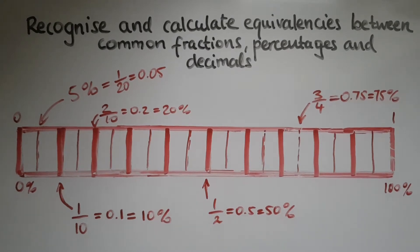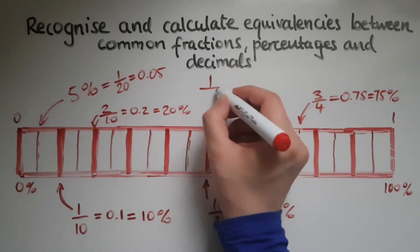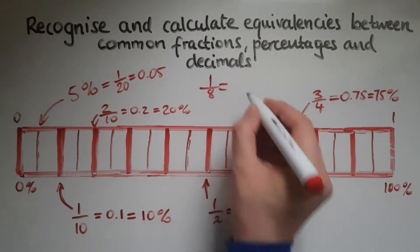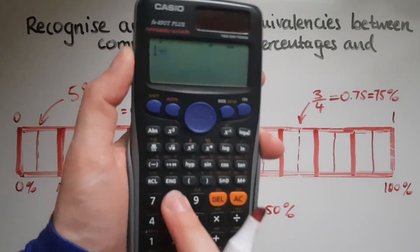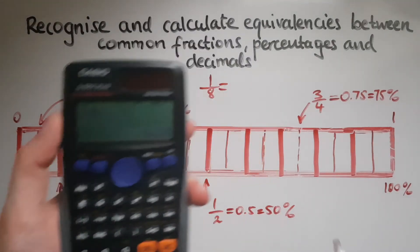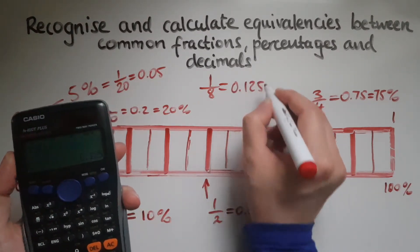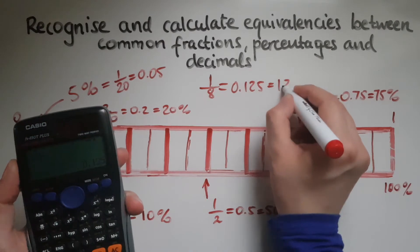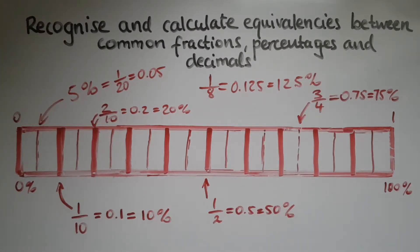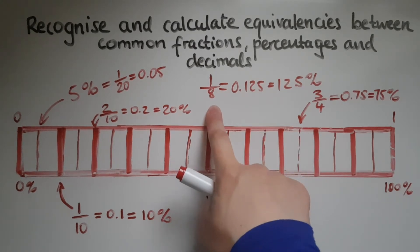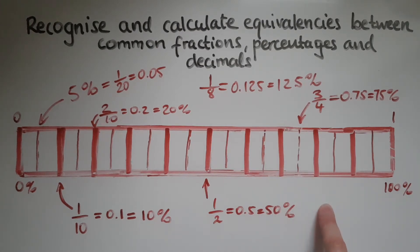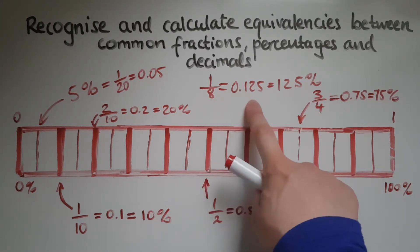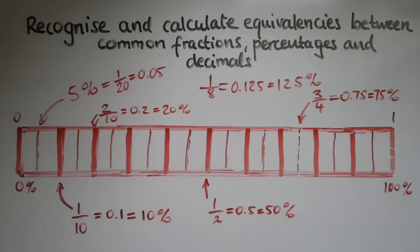Another common fraction is 1 eighth, so 1 out of 8. If you use a calculator, 1 divided by 8, that gives us 0.125 which is the same as 12.5%. If you want to work this out in your head, then you'd probably cut this into 4 equal parts first, which means you get quarters which is 0.25, and then cut those into halves again. So that gives you 0.125 which is 12.5%.